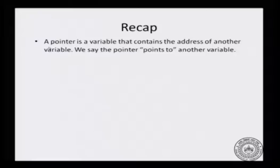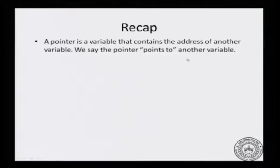Here is the stuff that we have seen about pointers. First we have defined what is a pointer — a pointer is just a variable that holds the address of another variable. We say that pointer points to another variable, and depending on what variable it points to, the type of that target, we say it is an int pointer, a character pointer, or a float pointer and so on.